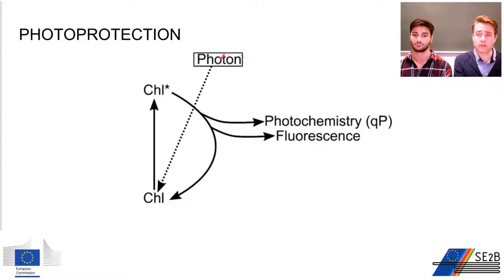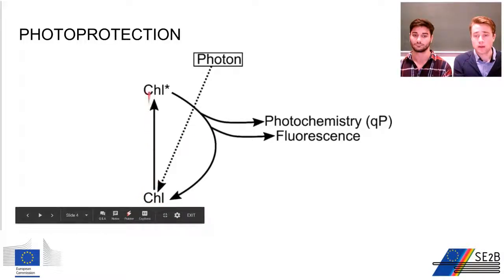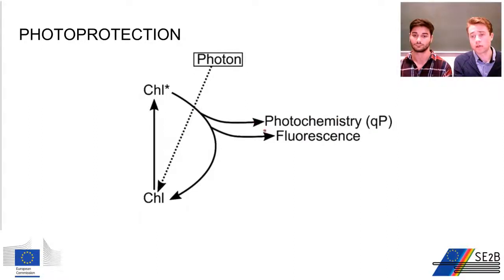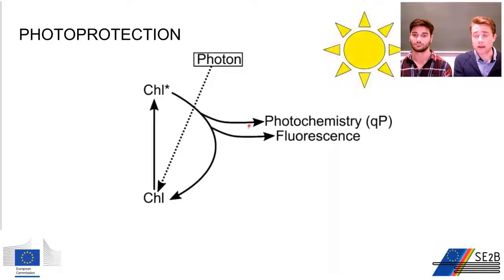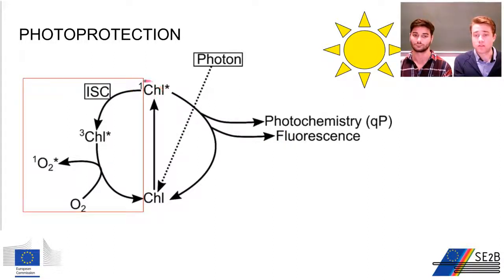If you have a photon it excites chlorophyll, and this excited state can either go to photochemistry or it can re-emit via fluorescence. However, in high light there are a lot of photons and we get a lot of chlorophyll excited states. The problem is that these excited states cannot all be used for photochemistry or fluorescence, so they remain very long on the chlorophylls and can via inter-system crossing become chlorophyll triplet states.